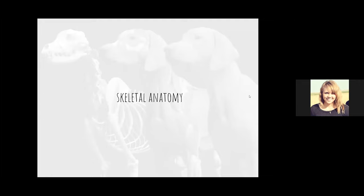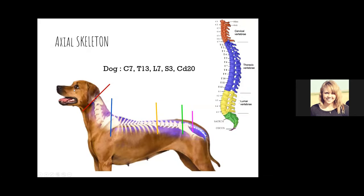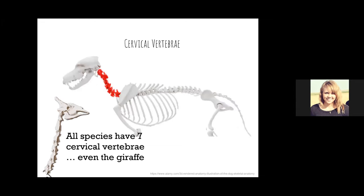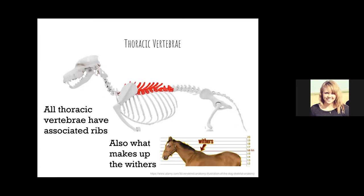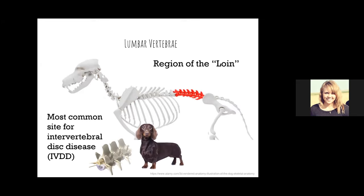Moving to anatomy — we'll go through this relatively quickly. First, the axial skeleton: the spine and head. There are regions of the spine similar to humans: cervical (neck), thoracic, lumbar, sacral, and caudal. Dogs have seven cervical, thirteen thoracic, seven lumbar, and three sacral vertebrae. Fun fact: all species have seven cervical vertebrae, even the giraffe. All thoracic vertebrae have ribs associated with them — this also makes up the withers. The lumbar region is the most common site for intervertebral disc disease in long-backed dogs like the dachshund. Caudal vertebrae are what are removed when you dock tails.